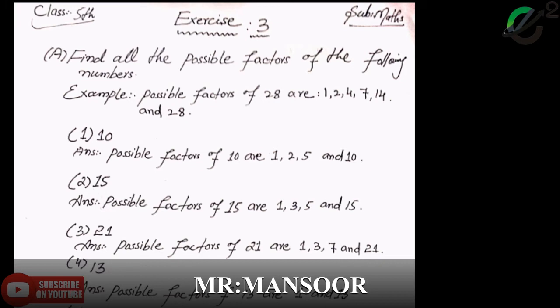Question number 4 is 13. We need to find the possible factors of 13. Answer: possible factors of 13 are 1 and 13.